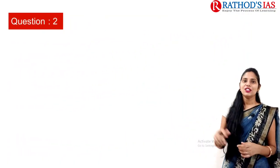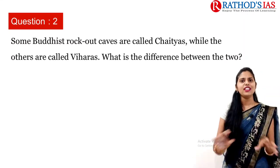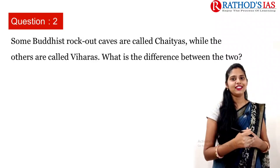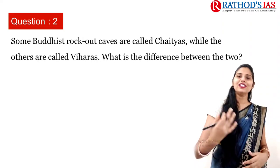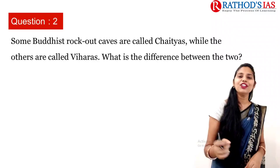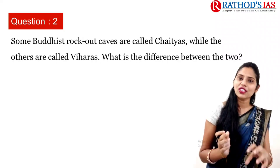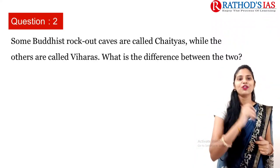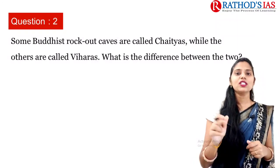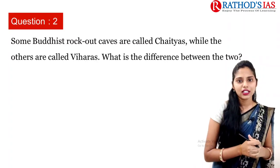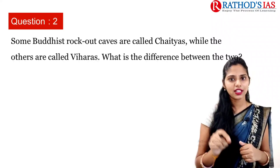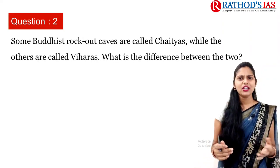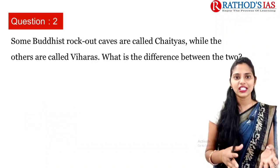Now let's move to the second question. This is a very simple and direct question. Many aspirants — even without coaching, even in self-study — can clear UPSC because UPSC gives basic questions. Out of 100 questions, about 40 are very easy and can be guessed correctly without coaching. The question is: some Buddhist rock-cut caves are called Chaityas while others are called Viharas — what is the difference between the two? This is a very basic question testing whether you know the difference between Chaityas and Viharas.